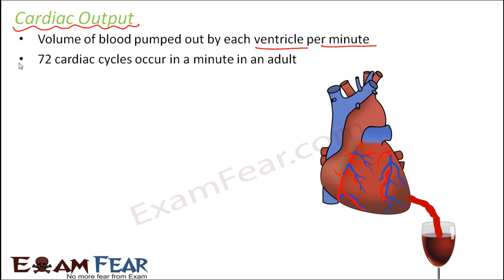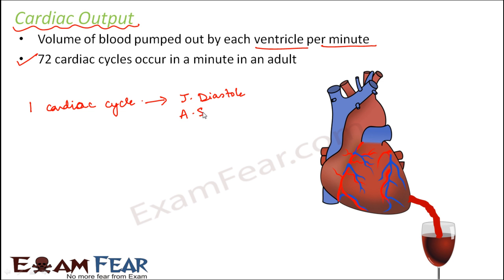Normally, 72 cardiac cycles take place in one minute in a healthy adult. One cardiac cycle consists of a joint diastole, followed by auricular systole, followed by ventricular systole. So there are 72 such cardiac cycles per minute — just imagine the rate at which contraction and expansion of the auricles and ventricles take place inside the heart.